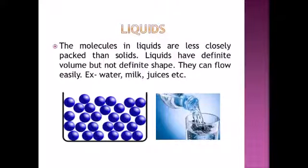The second state of matter is liquid — for example, water, milk, and juices. Liquids have definite volume but they do not have definite shape; they take the shape of the container in which they are kept. Liquids can flow easily because the molecules in liquids are less closely packed than solids and these molecules can move here and there. That is why liquids do not have a fixed shape, but they do have a fixed volume.